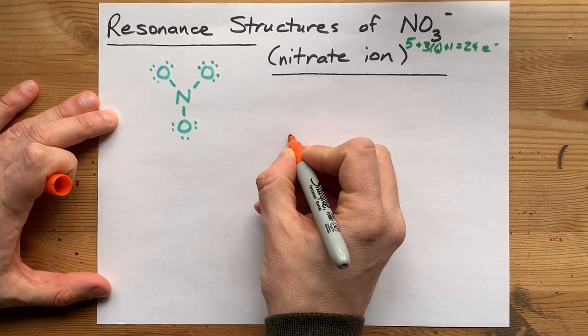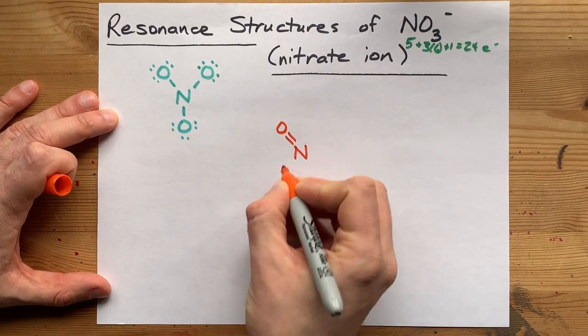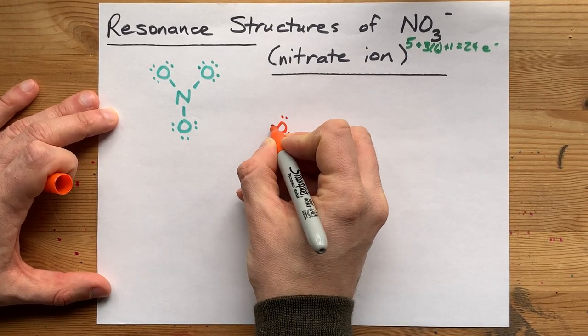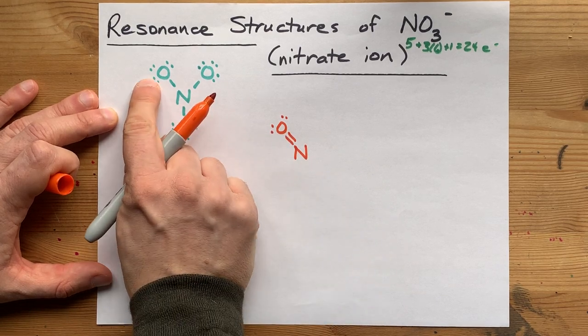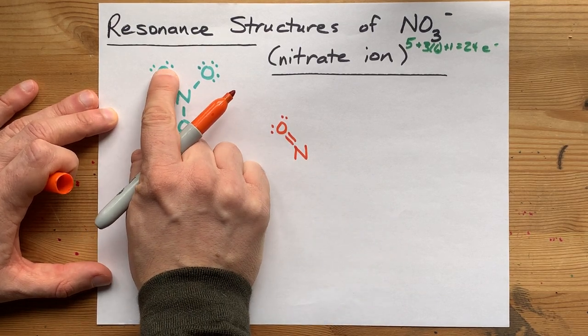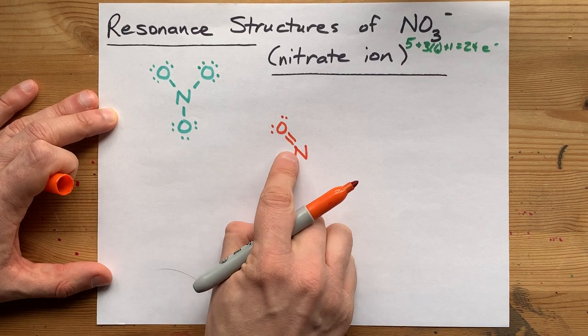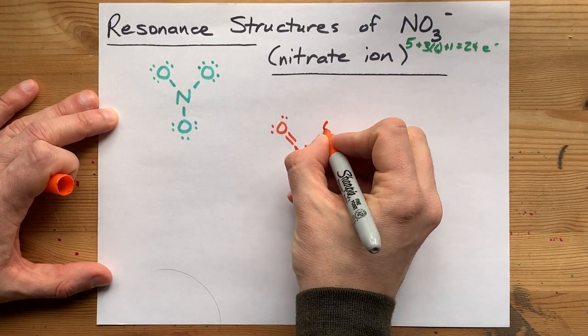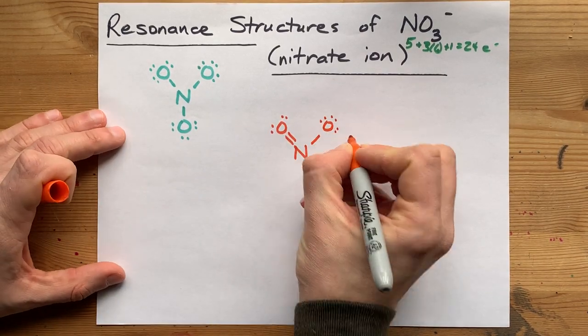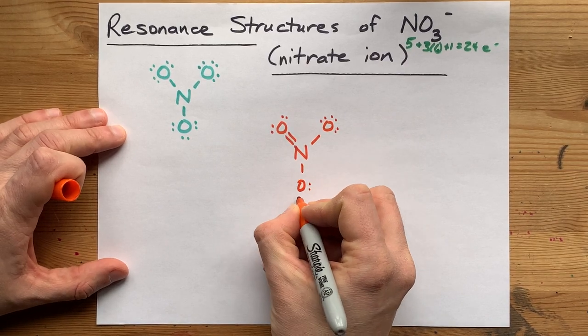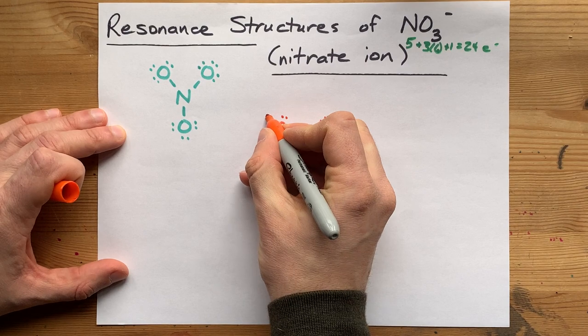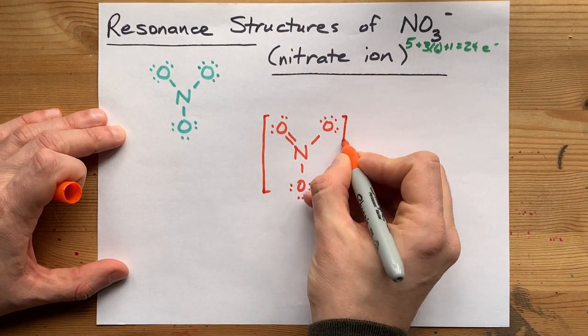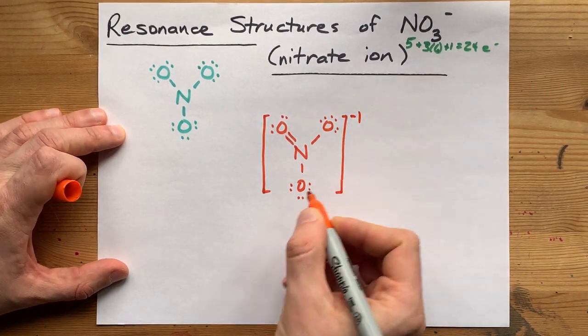One option is to have a double bond with that oxygen in the top left. It's now double bonded to the nitrogen. It still has two lone pairs on its own because that pair went in to form a double bond to share with nitrogen. And the rest of these oxygens are single bonded still. This is a stable Lewis structure for the nitrate ion, but it's only one of three possible structures.